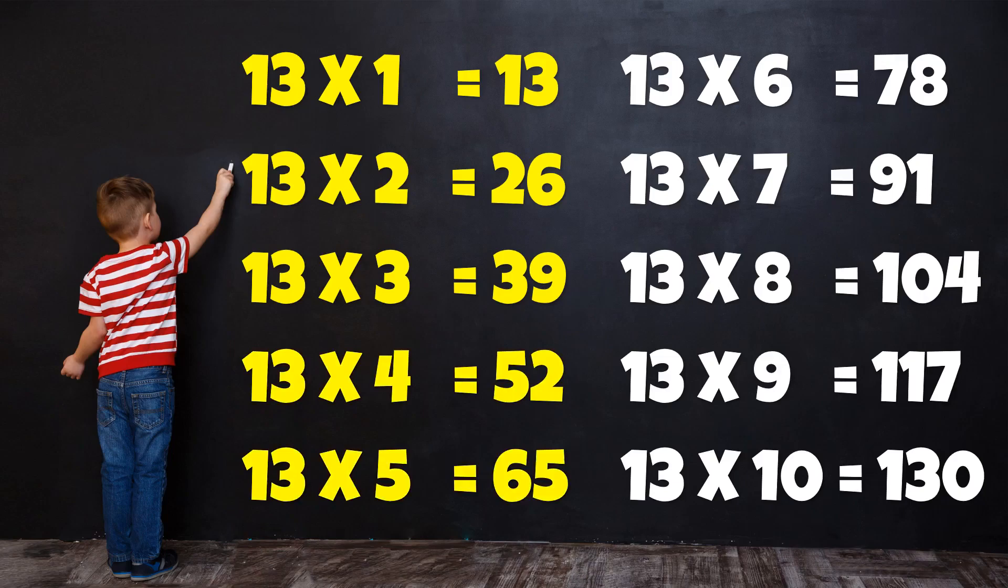13 5s are 65, 13 6s are 78, 13 7s are 91, 13 8s are 104, 13 9s are 117, 13 10s are 130.